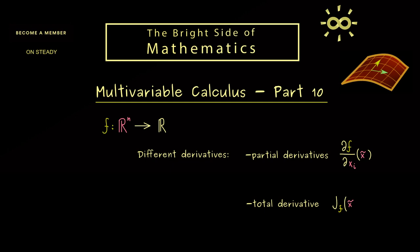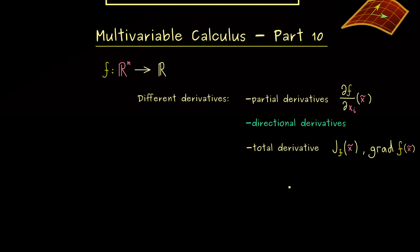Regarding this ordering, we can say that the directional derivative lies in between these two notions. Indeed, in the end you should see that partial derivatives are just special cases of directional derivatives — so the partial derivatives are a good starting point to explain what directional derivatives should be.